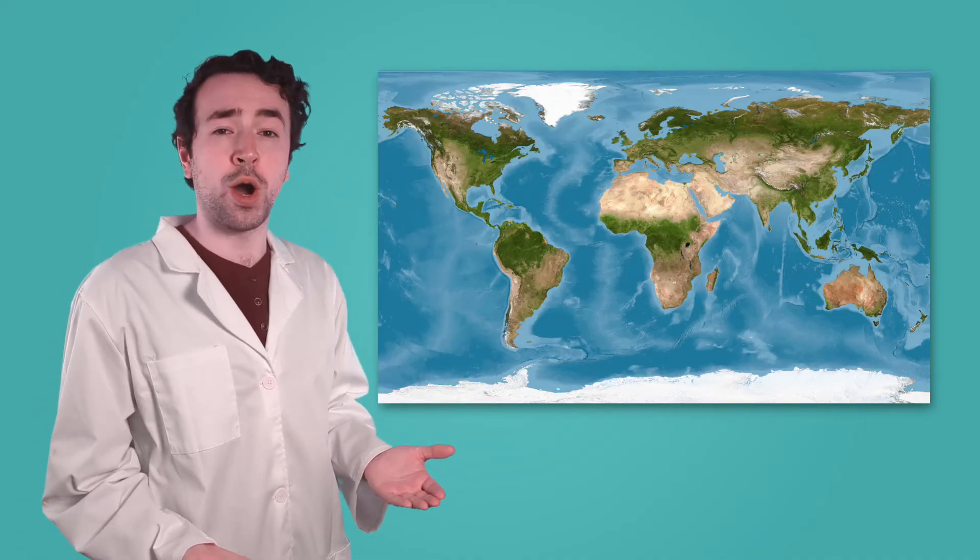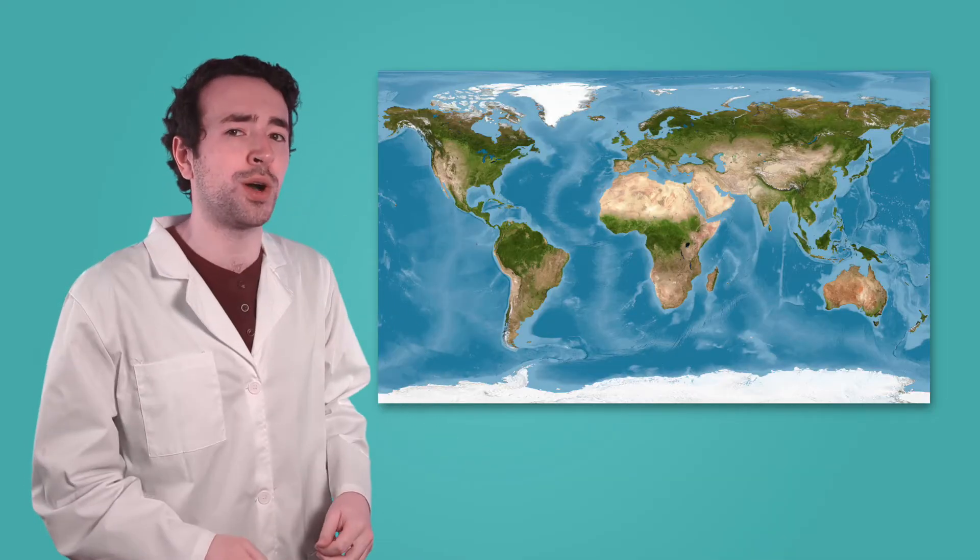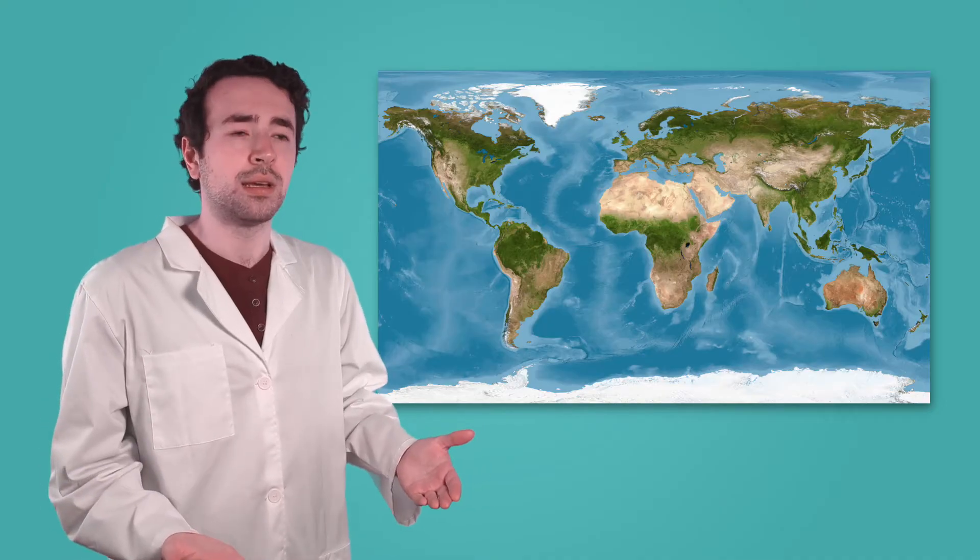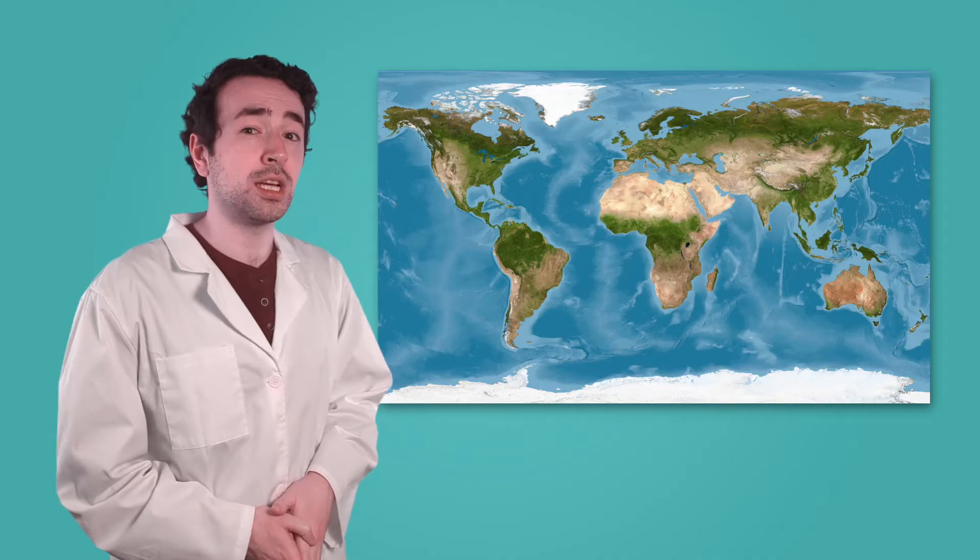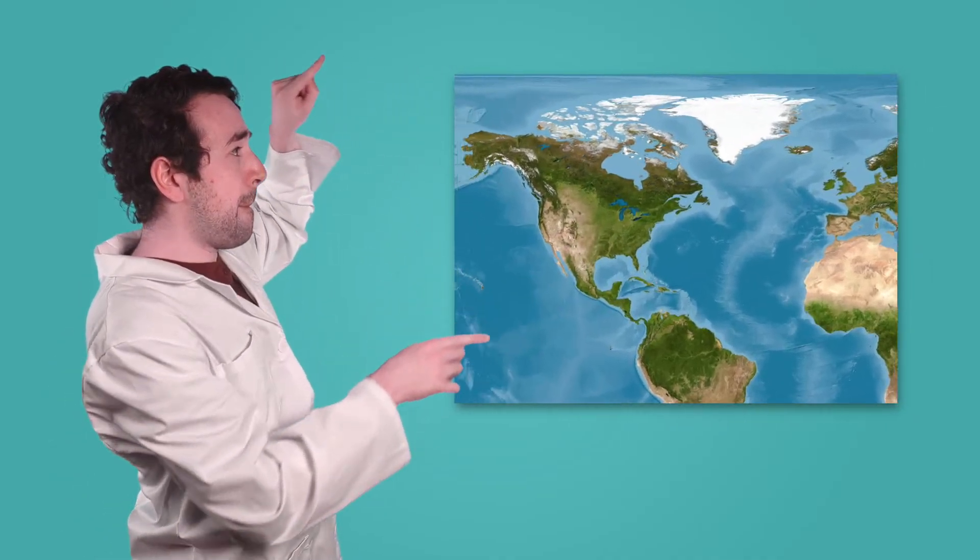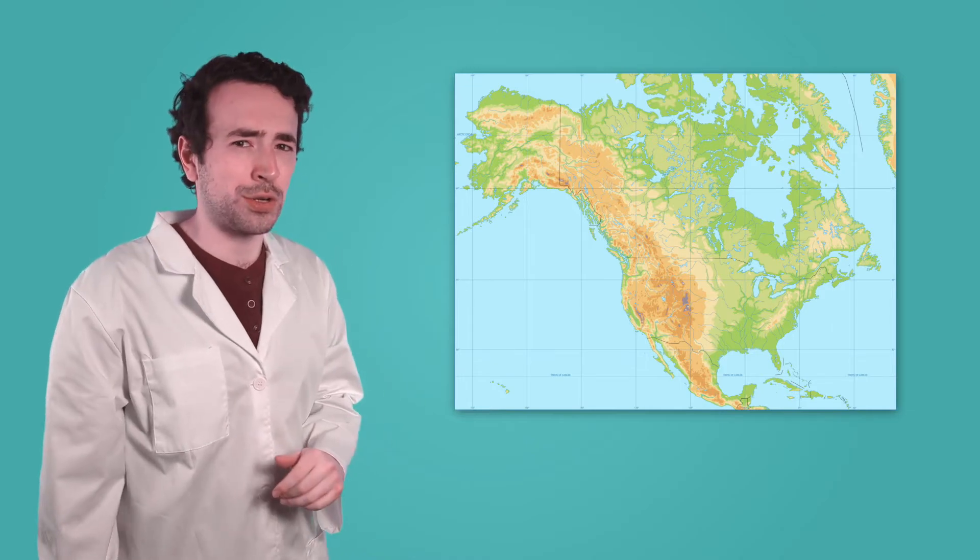So 97% of water is found in the oceans. Some quick math tells us that that leaves only 3% of earth's water in other places. No wonder it's hard to spot on a map this big. But if we zoom in a bit. Ah, there we go. Now what sources of water do you notice?